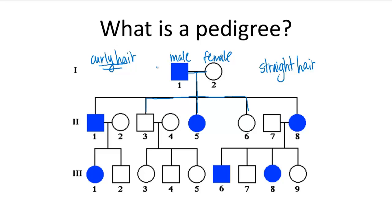In the first generation, the father has curly hair, the mother has straight hair, and then they have five offspring, three of which have curly hair, two of which have straight hair.